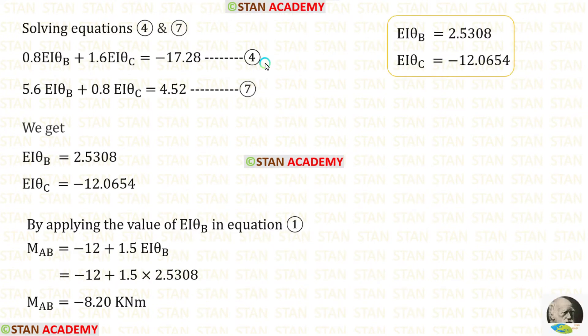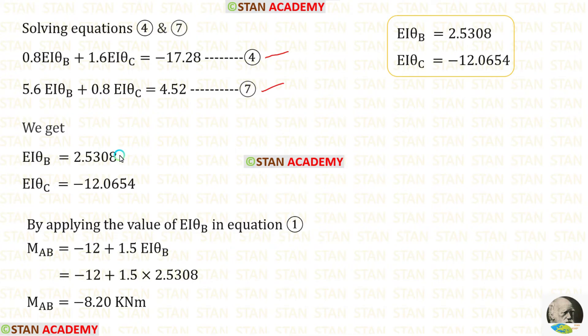We have made two equilibrium equations — equation 4 and equation 7. Now we use a calculator to solve these two equations. If you do not know how to solve two equations using a calculator, see the link in the description below. Using the calculator, we find EAθB and EAθC.